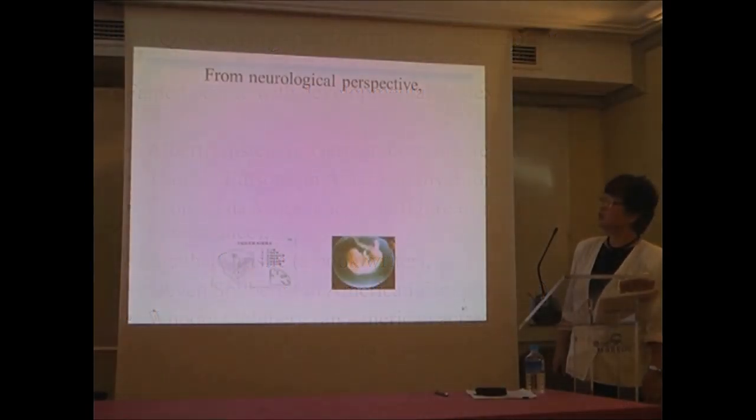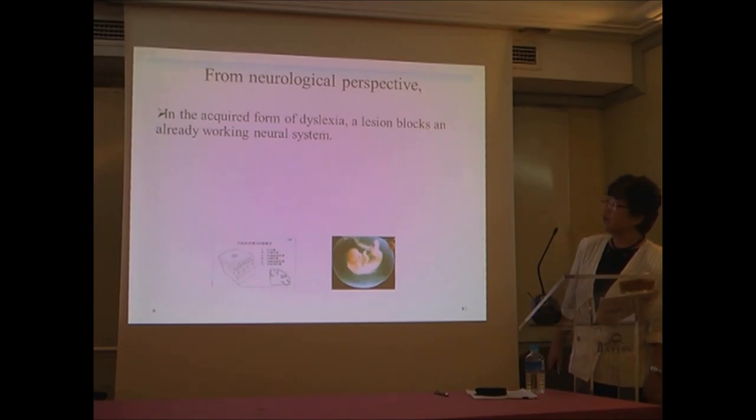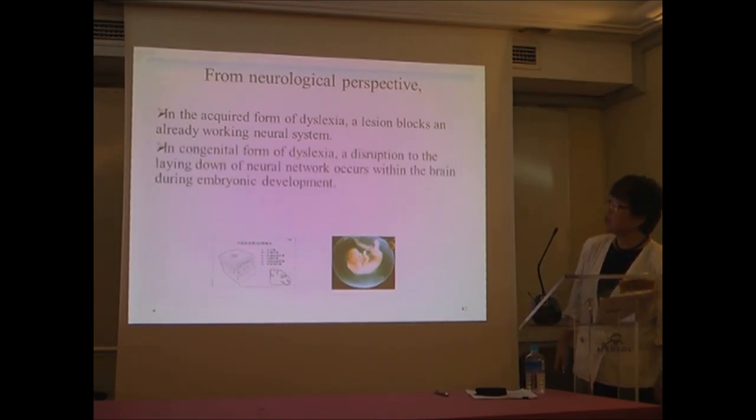Now, from neurological perspective, in the acquired form of dyslexia, a lesion blocks an already working neural system. In congenital form of dyslexia, which we call developmental dyslexia, a disruption to the laying down of the neural network occurs within the brain during the embryo development in the women's womb. So it starts at this stage. There are some cortical and subcortical anomalies also observed.